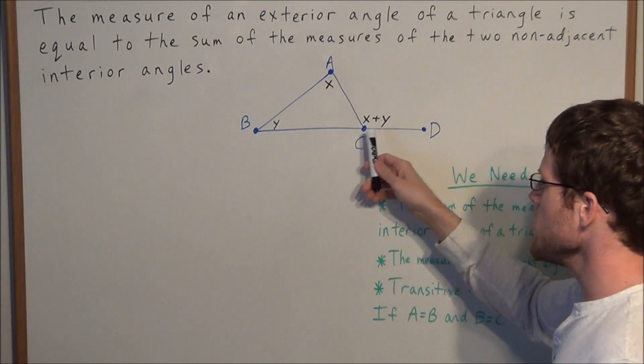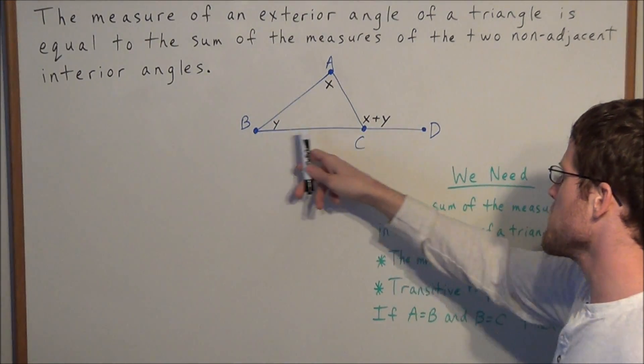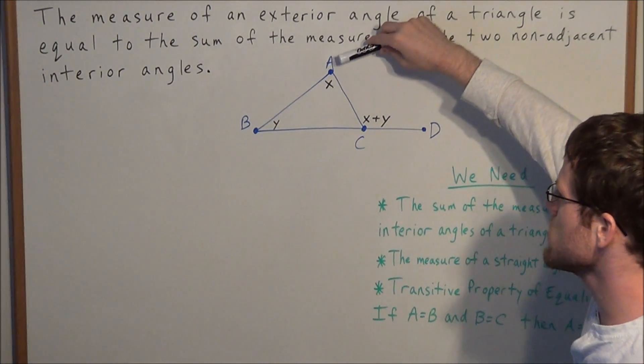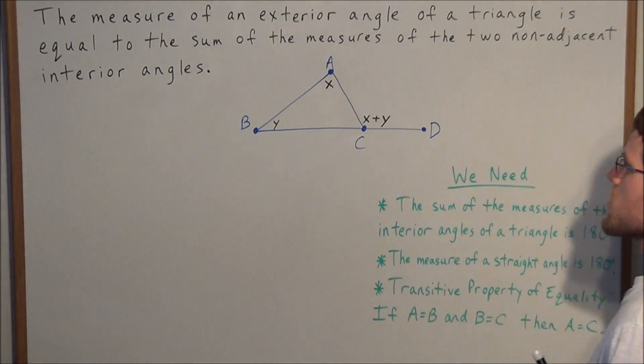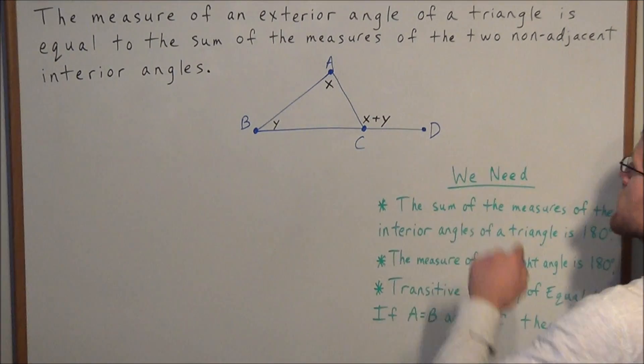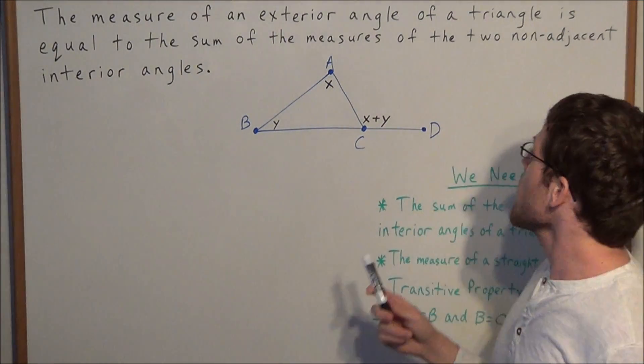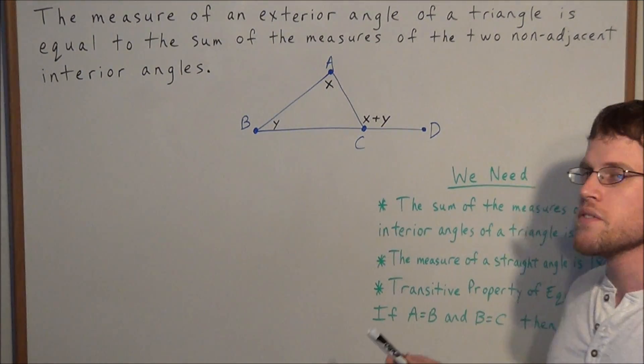Line segment BC, we extend this line segment to BCD, and that creates angle ACD. Now we're saying that the measure of this exterior angle is equal to the sum of the measures of the two non-adjacent interior angles.